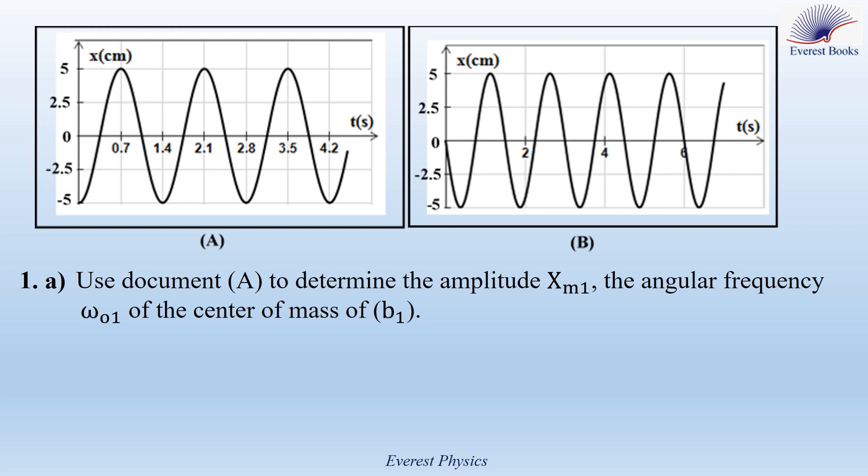Question 1a: Use document A (the left graph) to determine the amplitude xm1 and the angular frequency omega_01 of the center of mass of B1. The left graph shows that the maximum value attained by the abscissa x is equal to 5 cm. Therefore, the amplitude of pendulum A is equal to 5 cm.